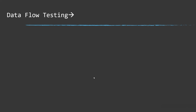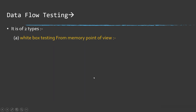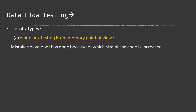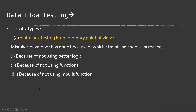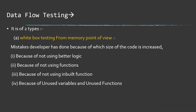Next, what is data flow testing? It is of two types: white box testing from a memory point of view, and white box testing from a performance point of view. Testing from a memory point of view looks at mistakes developers have made that increase the size of the code — such as not using better logic, not using built-in functions, using labels and unused functions. These issues increase the memory size of the code.